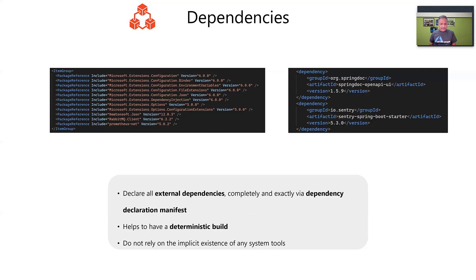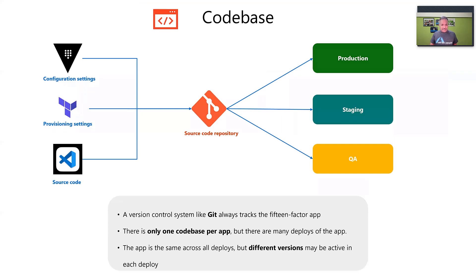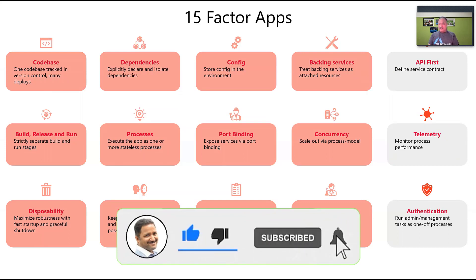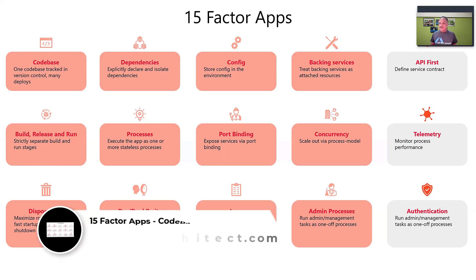Each application should explicitly declare its dependencies via a manifest file: the pom.xml in Java, the .csproj in .NET, requirements.txt in Python, or the equivalent in JavaScript frameworks. Whichever programming language you use, modern languages provide ways to specify dependencies. That concludes this video, where we covered two of the 15-factor app principles: codebase and dependencies. In future videos we'll look at the remaining 13 factors. If you found this useful, please like, comment, subscribe, and keep the likes going!